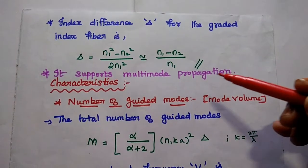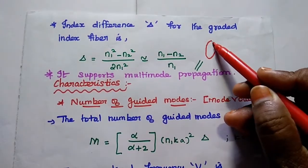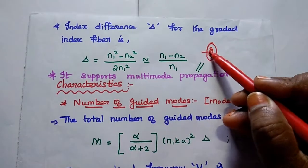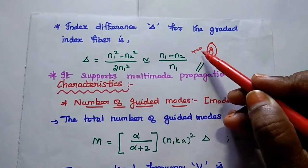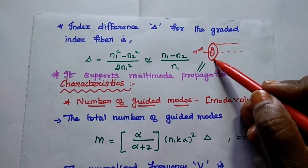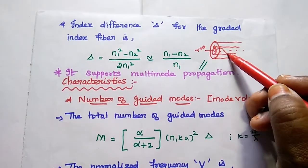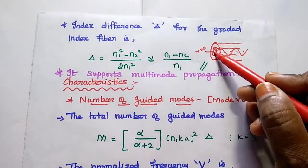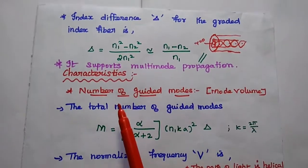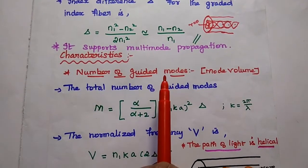The graded index fiber supports multi-mode propagation because it has a graded index profile. At R equal to 0, that is at the core axis, it has the maximum refractive index value, so inside the core we can have multiple modes. Graded index fiber supports multi-mode propagation; it does not support single-mode propagation — that is a very important point.